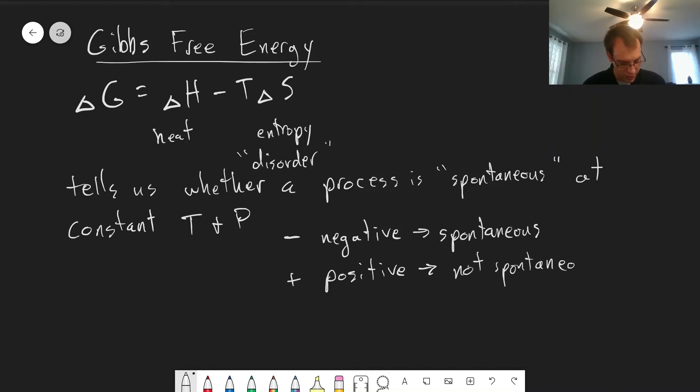One thing thermodynamics does not tell us is how fast a process can happen. A negative Gibbs free energy is required for a process to occur on its own, but it's not sufficient. Gibbs free energy tells us nothing about how fast a process can happen—that is determined by kinetics.